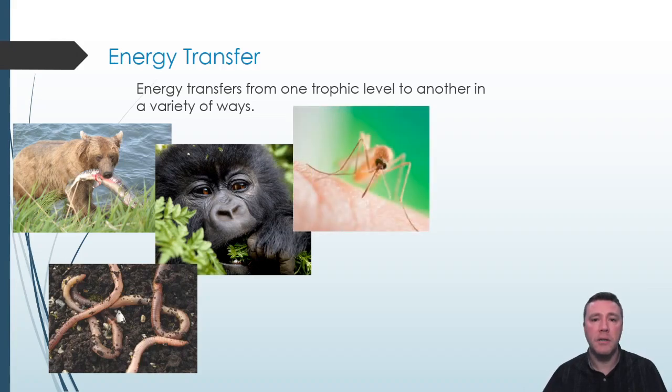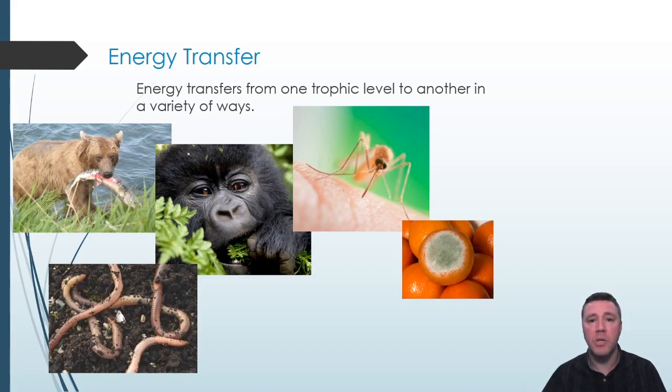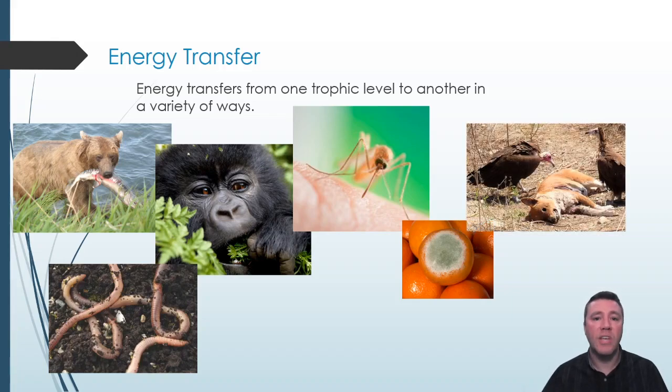A parasite may extract energy and nutrient-rich compounds from a host, like this mosquito drawing blood. Fungi grow on the surface of other organisms, excrete enzymes that digest that organism, then absorb nutrients back into their own cells. Scavengers, like these vultures, consume organisms that have already died from some other cause.